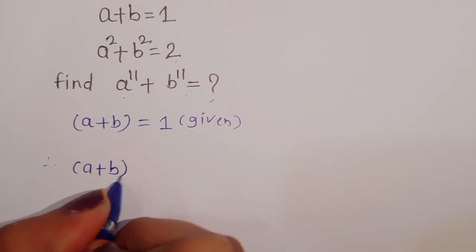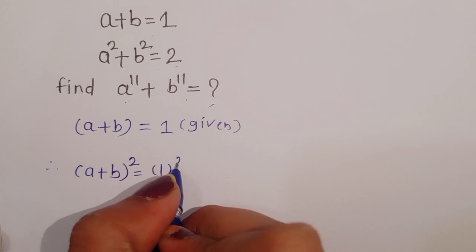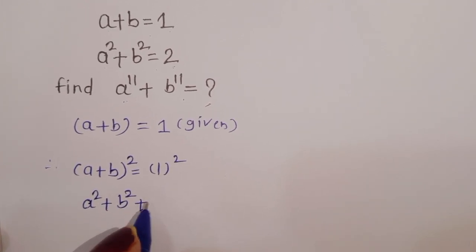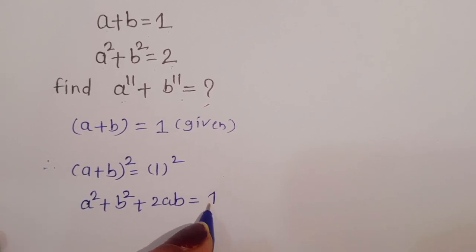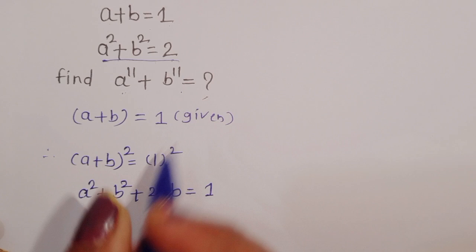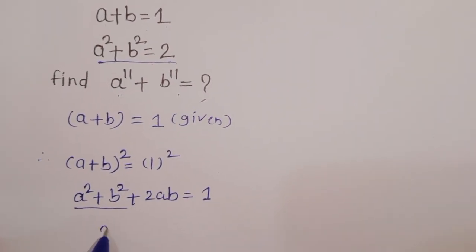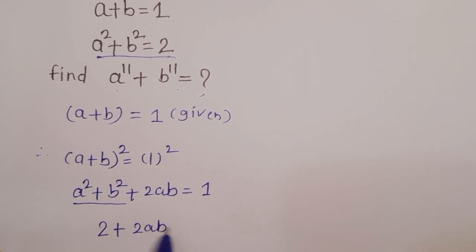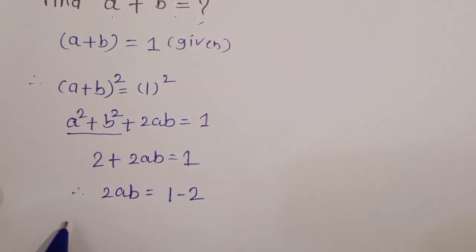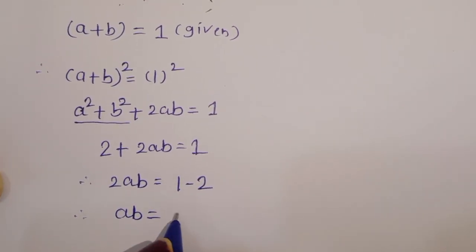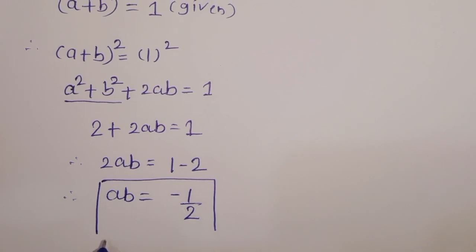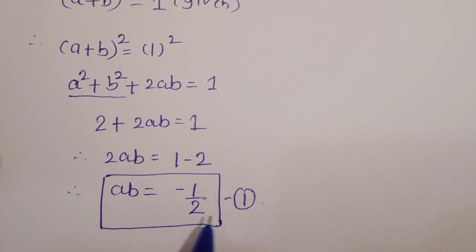We can take a square of this: (a plus b) square is equal to 1 square. Now what is the value of (a plus b) whole square? That is a square plus b square plus 2ab is equal to 1. We know that a square plus b square is equal to 2 (given), so 2 plus 2ab is equal to 1, therefore 2ab is equal to minus 1, so ab is equal to minus 1 upon 2. This is the value of ab — equation 1.